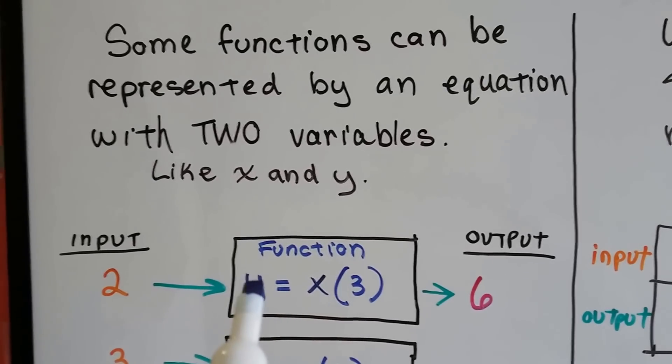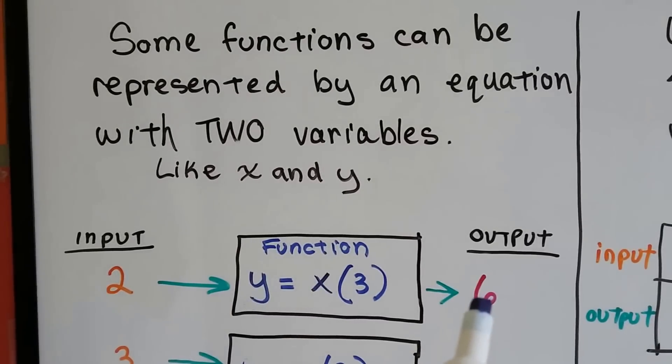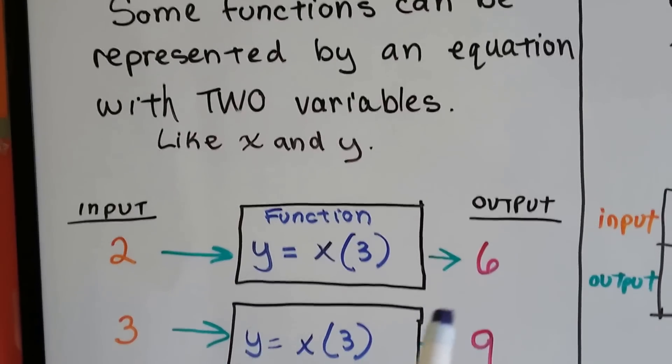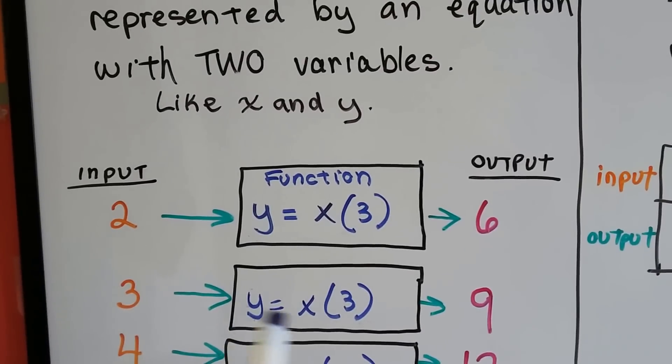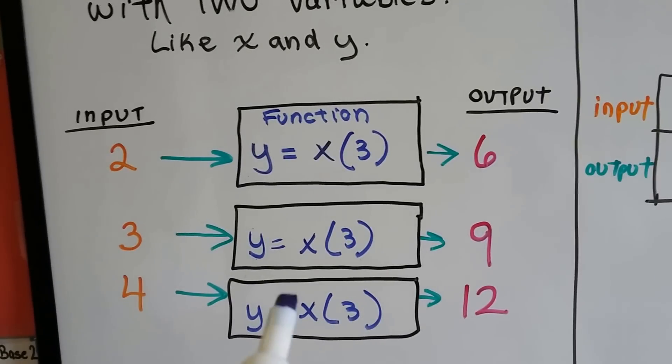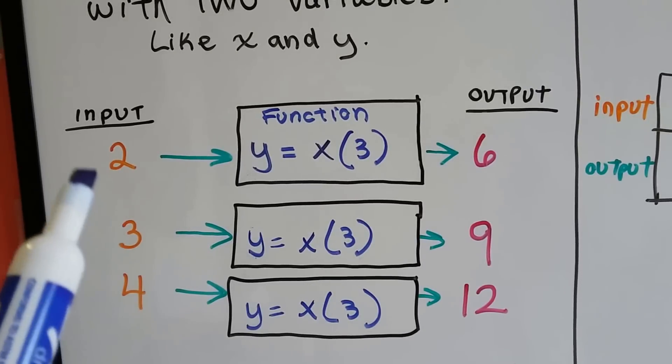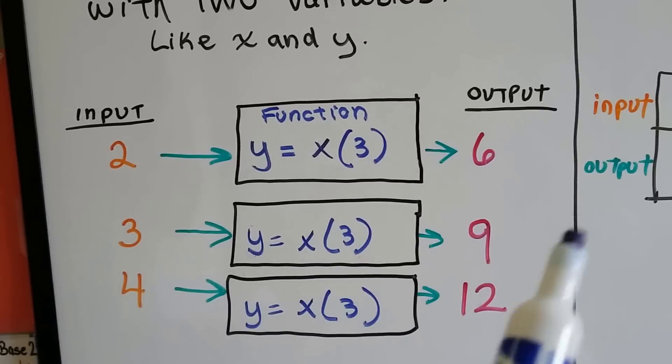x times 3 equals y. So if we put in a 2 for x, the output's going to be 6. The y is going to equal 6. If we put in a 3, we'll have 3 times 3, and that'll be 9, and y will equal 9. If we put a 4 in for the x, then it'll be 12, and the y will equal 12. Whatever goes in comes out, and they have a relationship.